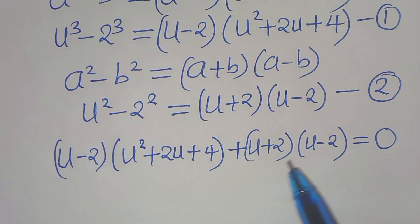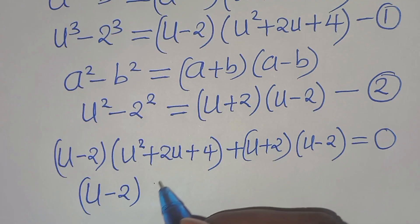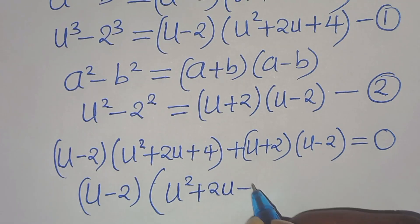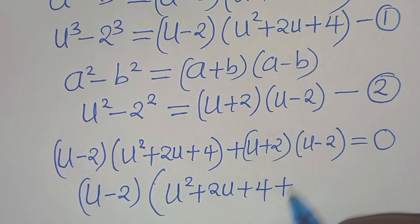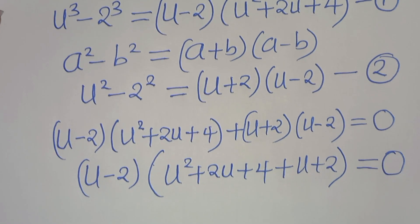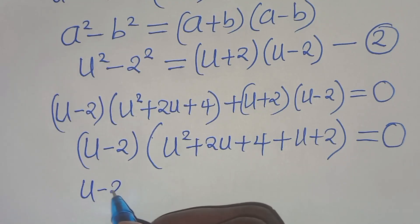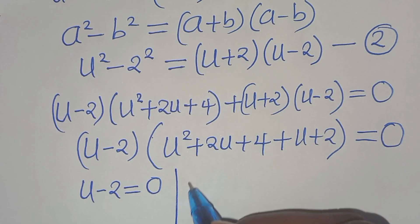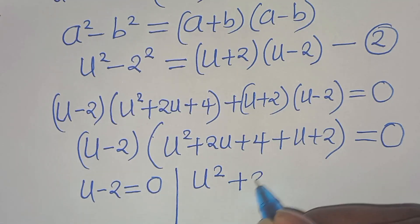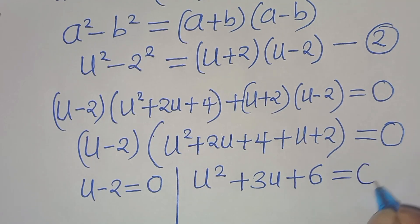We notice that (u − 2) is a common factor, so we factor it out: (u − 2) times [u² + 2u + 4 + u + 2] equals 0. Combining like terms inside the bracket: 2u + u = 3u and 4 + 2 = 6, giving us (u − 2)(u² + 3u + 6) = 0.